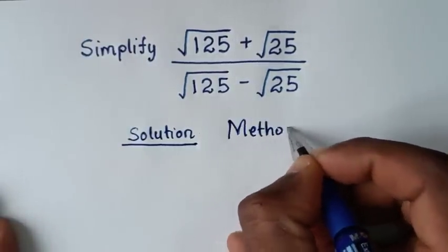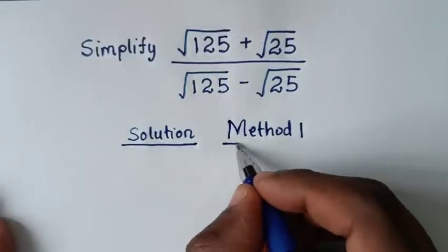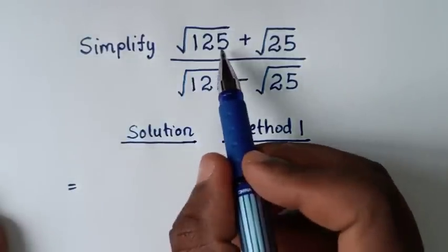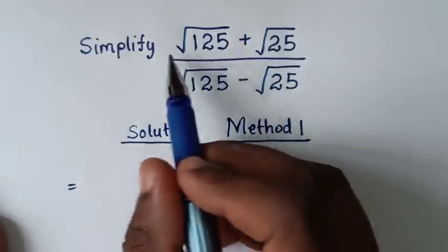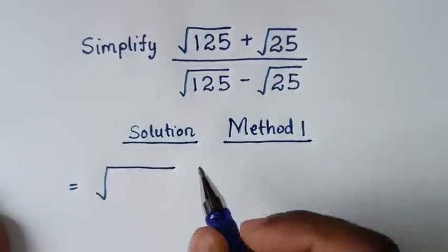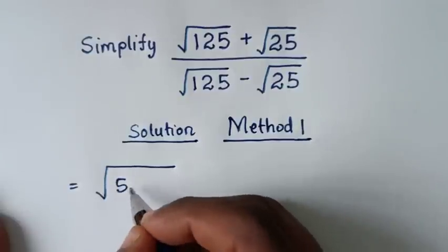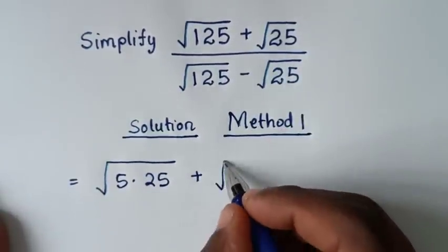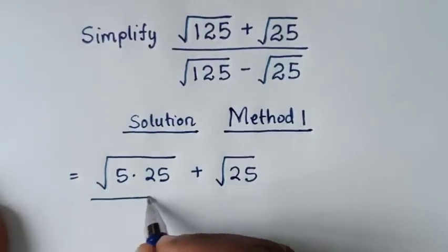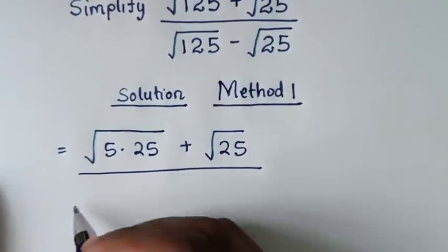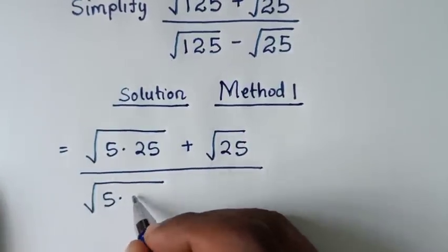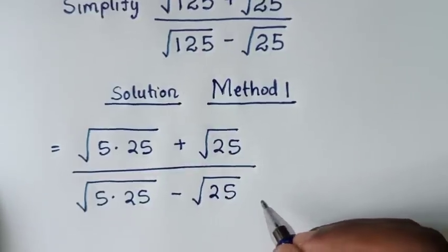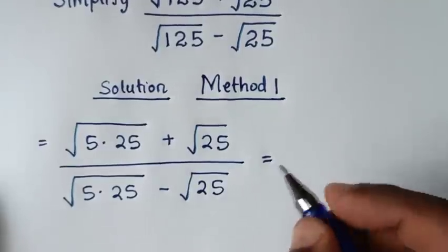Method one: we rewrite square root of 125 as square root of 5 times 25, then plus square root of 25, over square root of 125 written as square root of 5 times 25, then minus square root of 25.